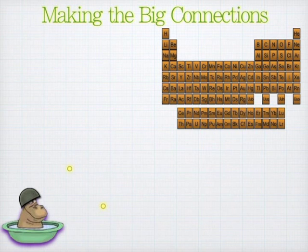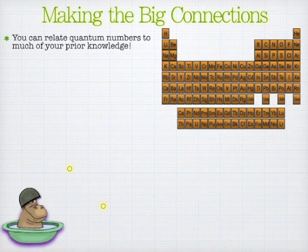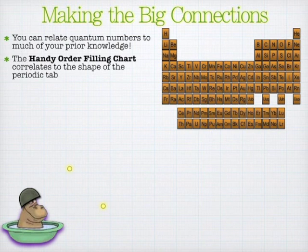Let's look at some of the stuff behind this. Think of this as sort of the da Vinci code of the periodic table. One of the first things you can notice is the handy order of filling chart corresponds directly to the periodic table.